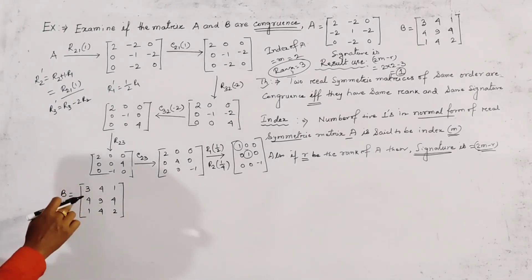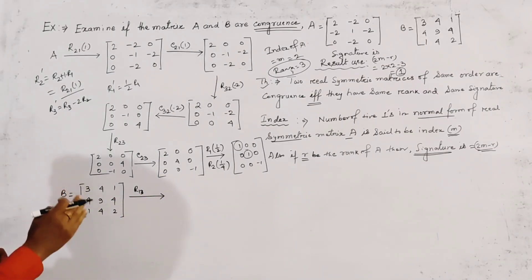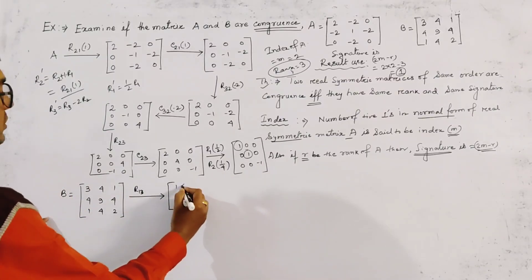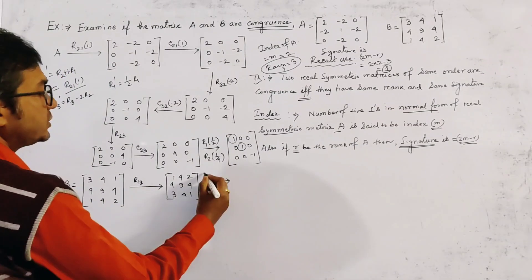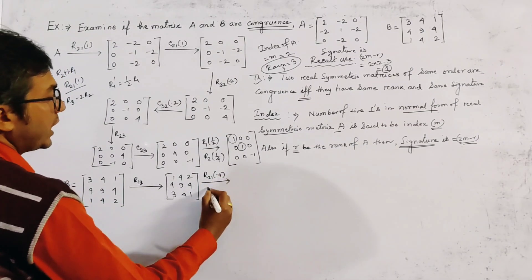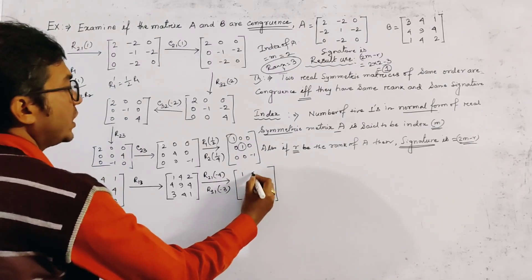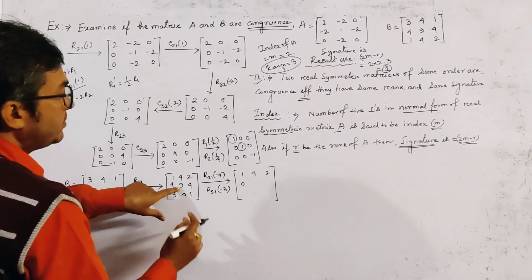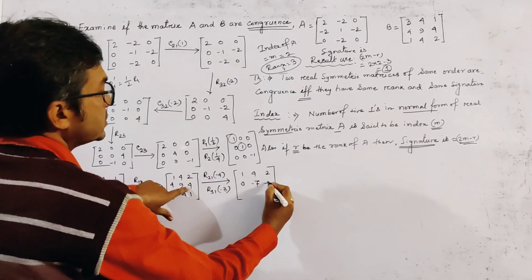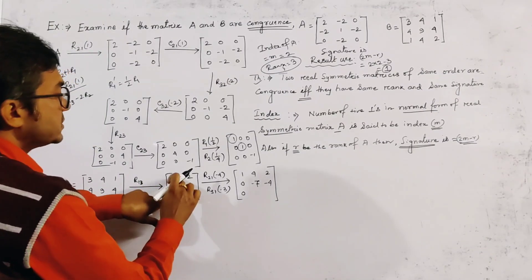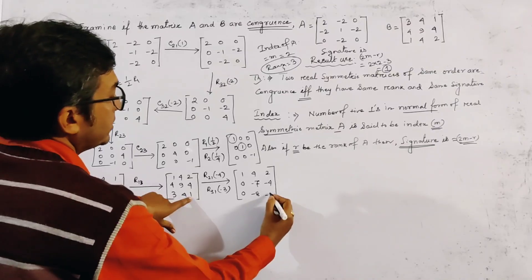To find the rank and signature of matrix B, we first apply the operation R13, that is, row 1 and row 3 are interchanged, giving the matrix [1, 4, 2], [4, 9, 4], [3, 4, 1]. Then we apply operations R2(1, -4) and R3(1, -3) together. The first row stays unchanged as [1, 4, 2]. The second row becomes [0, -7, -4] and the third row becomes [0, -8, -5].